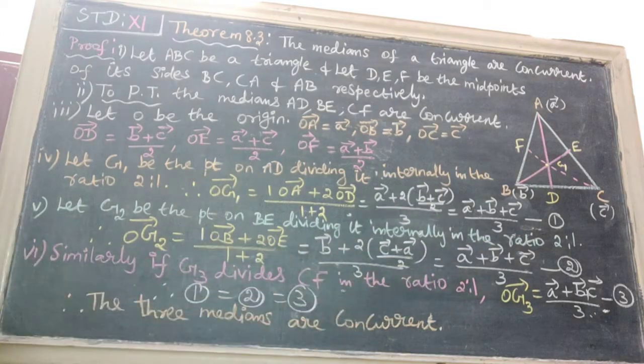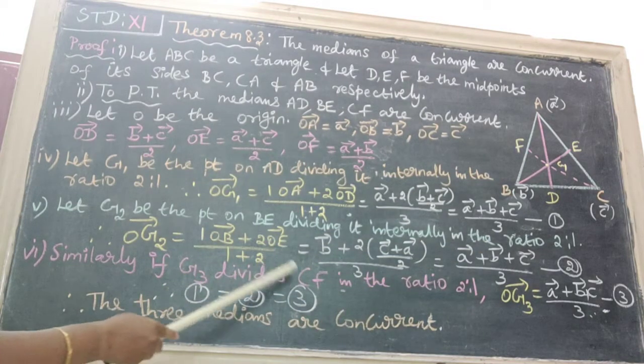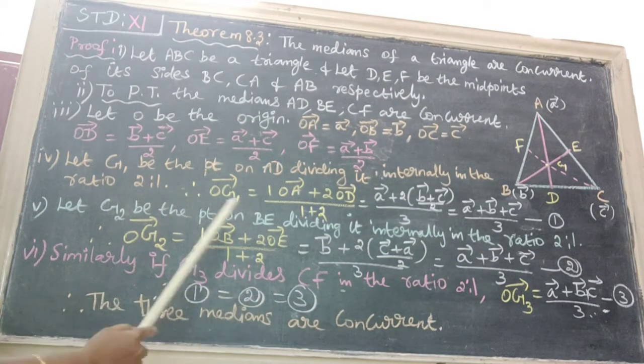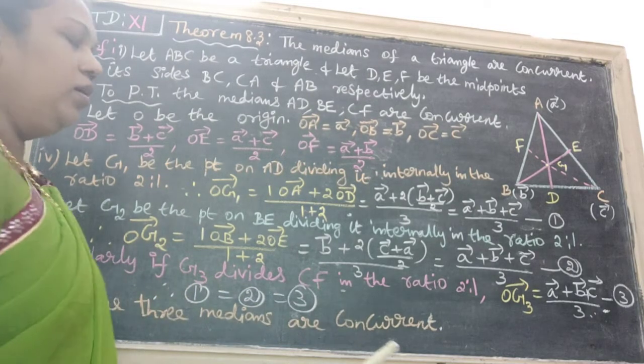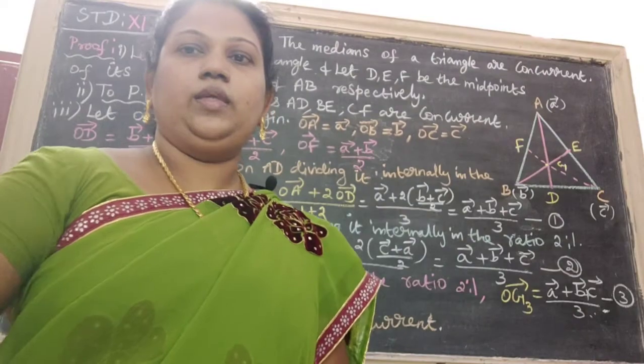From equations 1, 2, 3, we get 1 equals 2 equals 3. All three G points are equal. Therefore, the three medians are concurrent. Hence the theorem is proved.